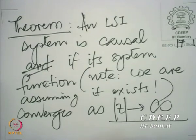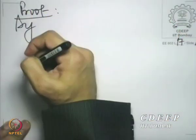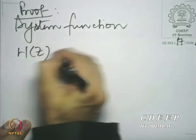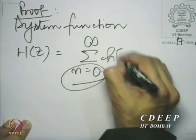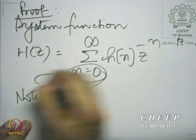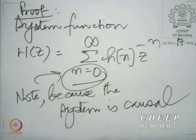That is very easy to see. If an LSI system is causal and has a system function, then the system function H(z) must equal the summation from n=0 to infinity of h[n] z^(-n), because the system is causal, which ensures there are no samples before n=0.